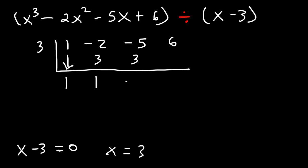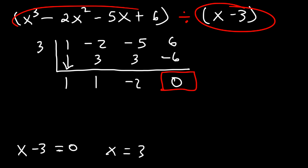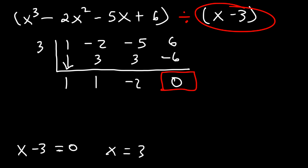Negative 5 plus 3 is negative 2. And then multiply — 3 times negative 2 is negative 6. And the remainder is 0. If the remainder is 0, that means this is a factor of the function, which means 3 is one of the zeros. If you don't get zero, then this is not a factor — it's not factorable by x minus 3. But if you do get 0, the function is factorable by x minus 3.